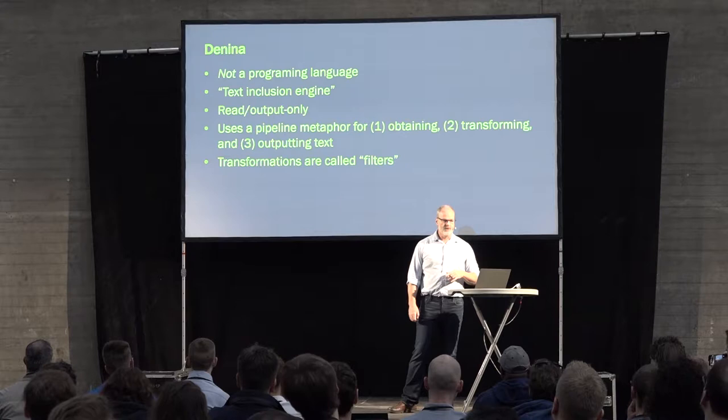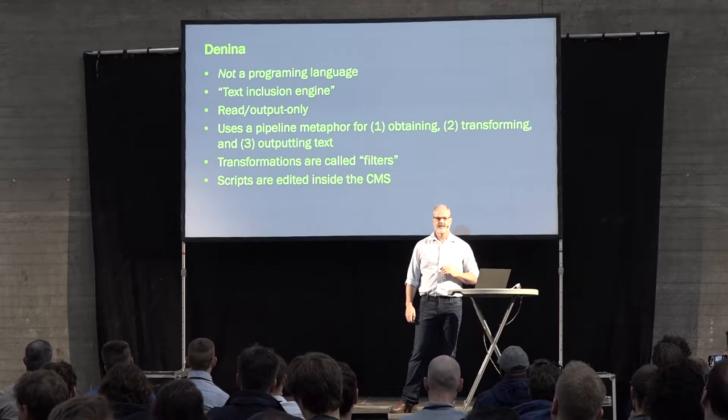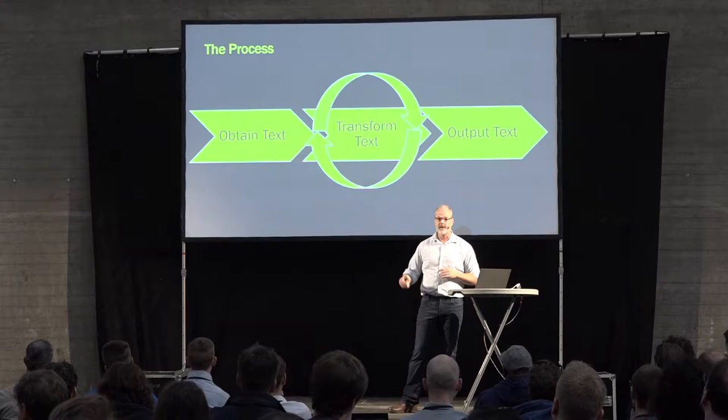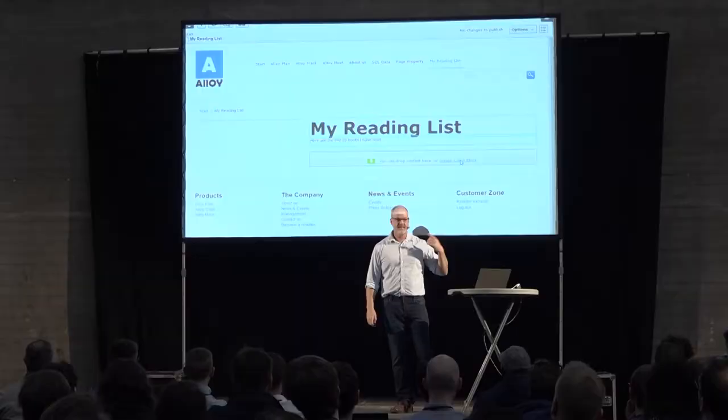Transformations are called filters — you acquire text and you filter it over time. Scripts are edited inside the CMS. You obtain some text, transfer it iteratively — every step in the pipeline transforms that text, and the next step works off what was transformed in the last step, and so on, until you finally output it.